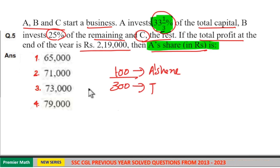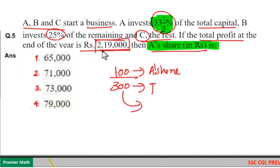We have to find out what is A's share. 100 part is A's share here. 300 part is given as 2,19,000. Then one part is equal to 730. Three goes seven times in 21, three goes three times in nine.